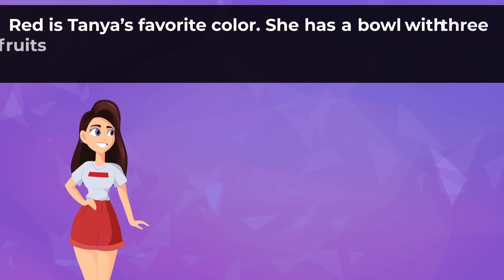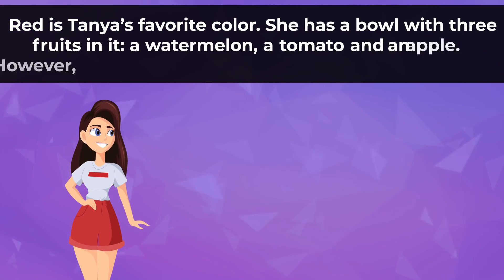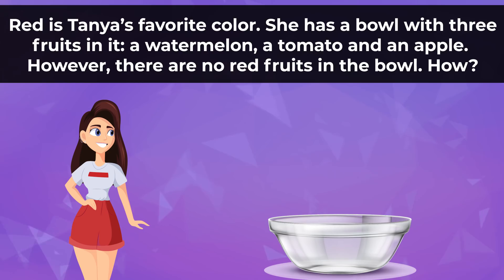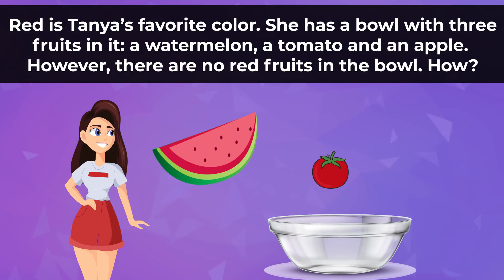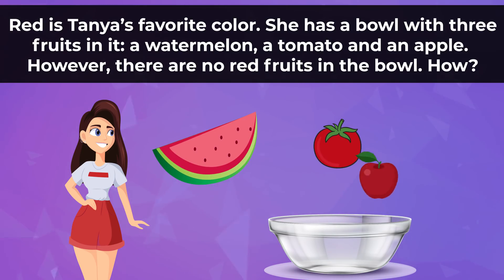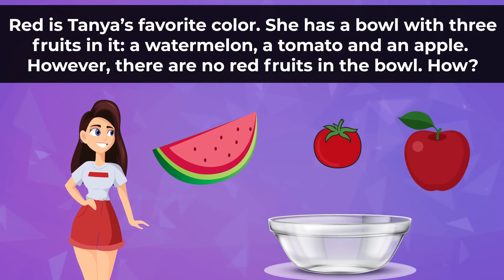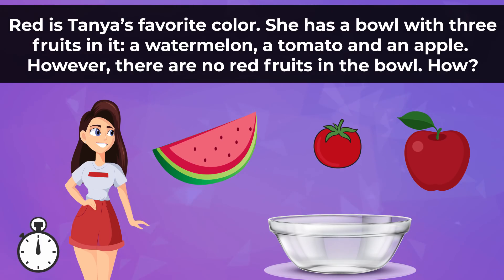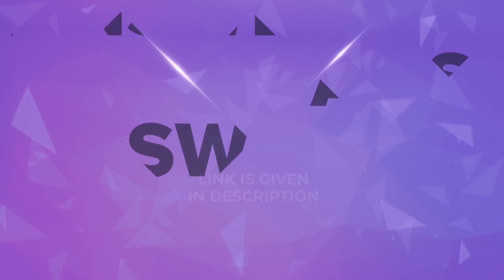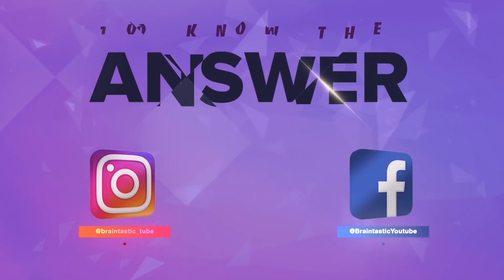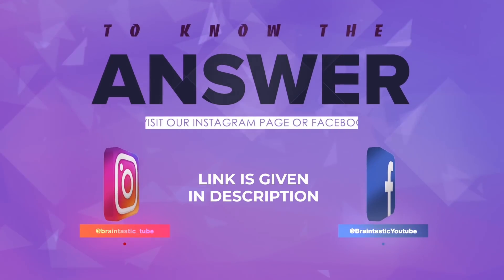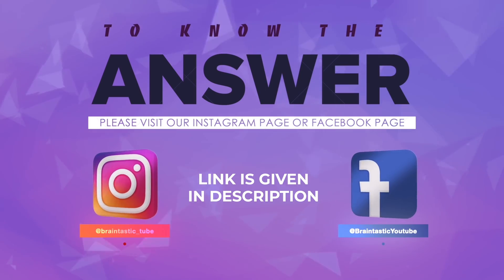Red is Tanya's favorite color. She has a bowl with three fruits in it: a watermelon, a tomato, and an apple. However, there are no red fruits in the bowl. To know the answer to this riddle, kindly visit our Instagram and Facebook handle — the link is given in the description box below.